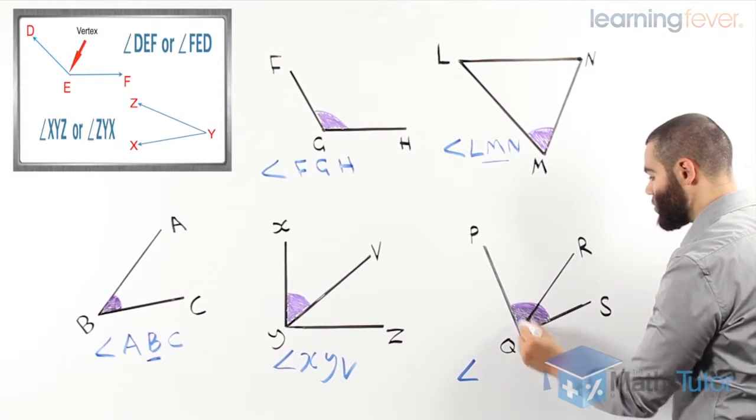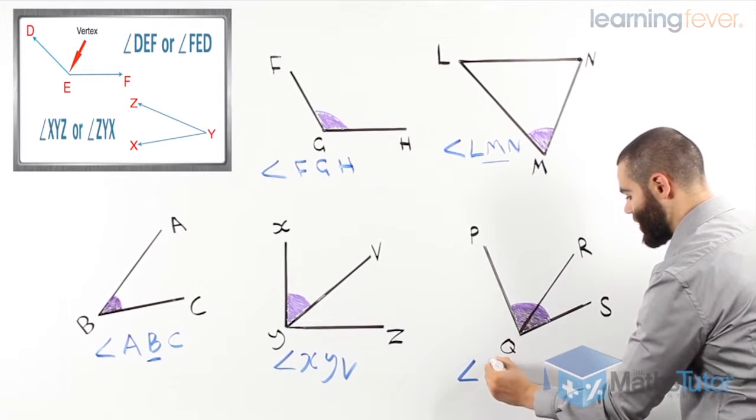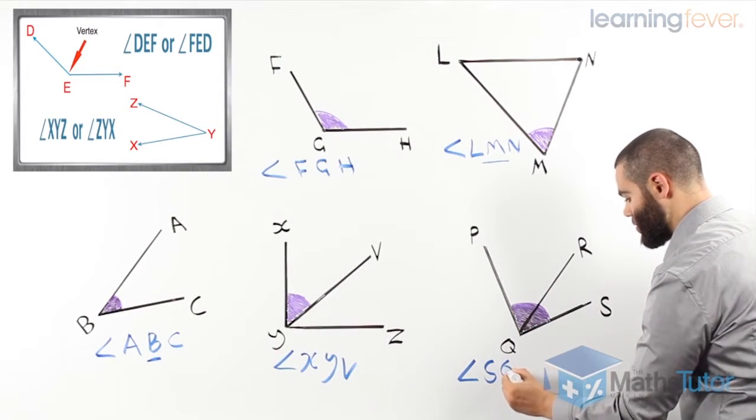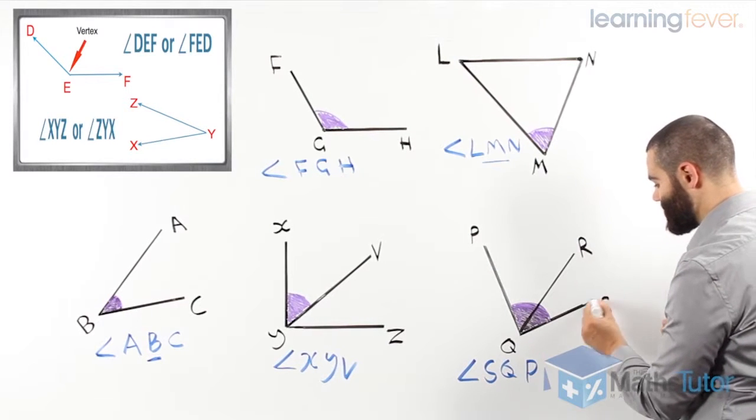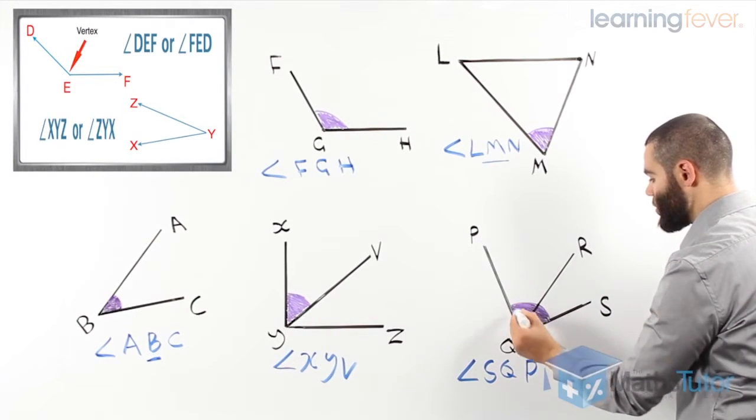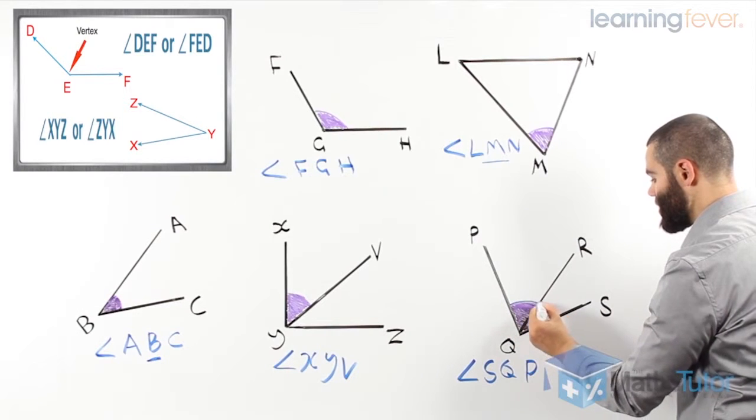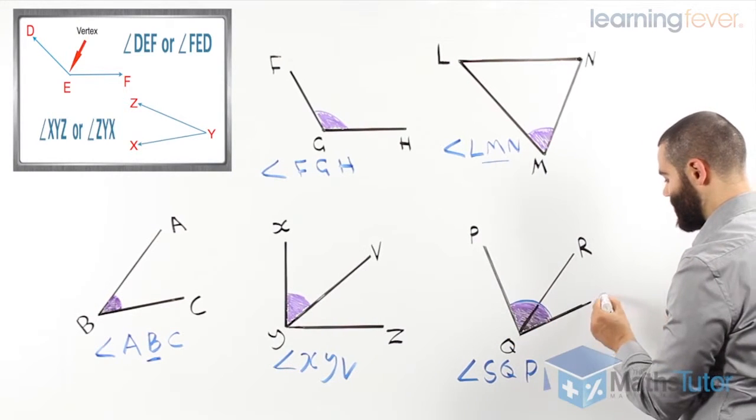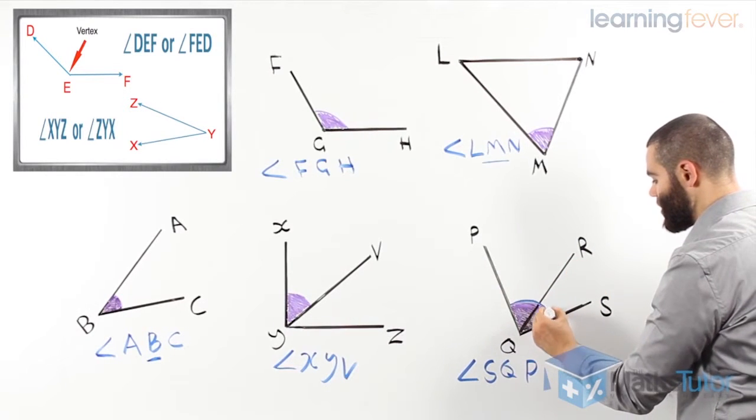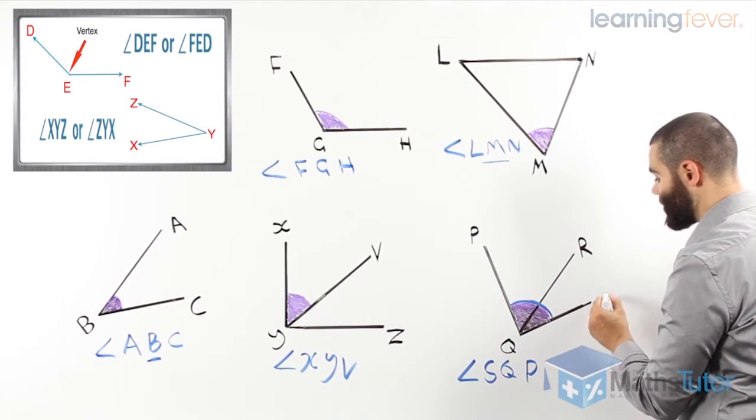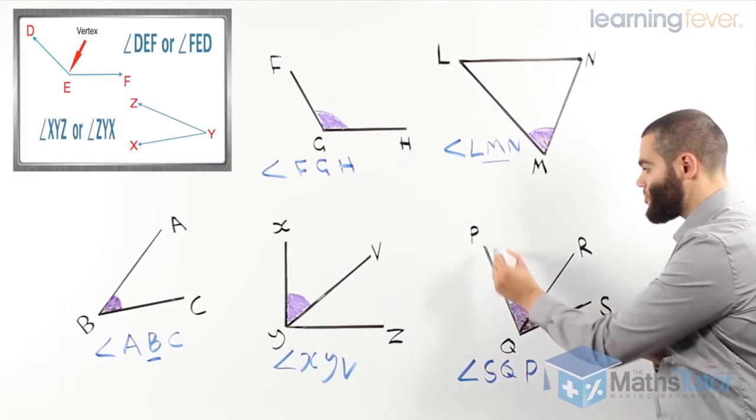Or angle SQP. Angle SQP, which will cover the whole angle as you see it. We don't have to write R because we've already included it by saying angle SQP.